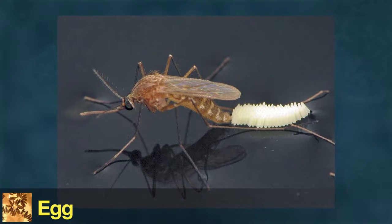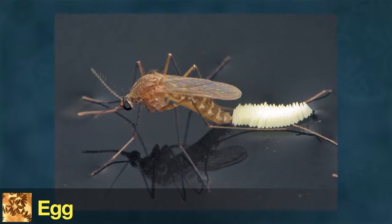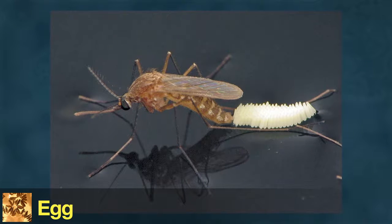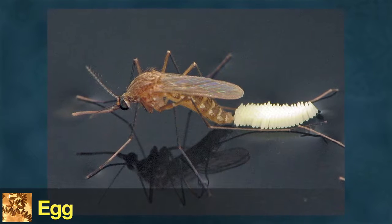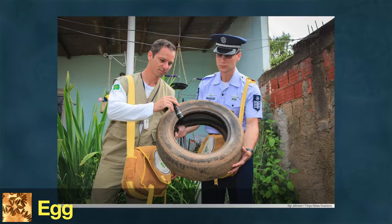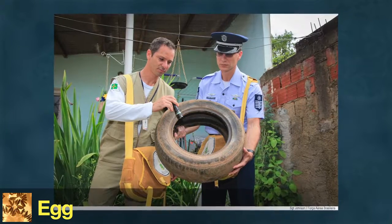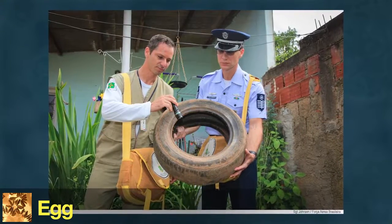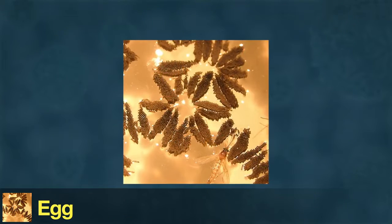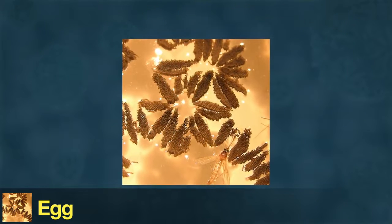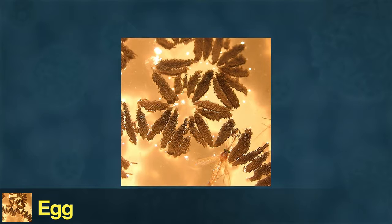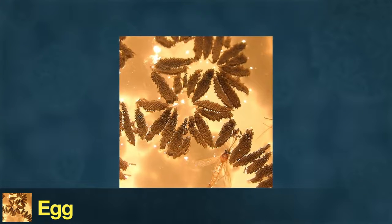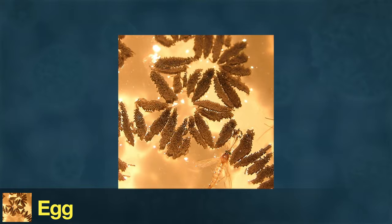Female mosquitoes lay eggs on or near a body of still water. Some species prefer natural bodies of water, like ponds. Others prefer water found in containers like buckets, flower pots, or discarded tires. Each female mosquito may lay hundreds of eggs. As long as they have water, the eggs can take as little as two days to hatch, and may hatch faster in warmer temperatures.